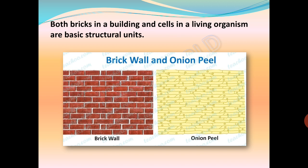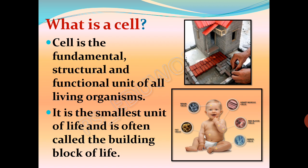In the picture, you can see the similarity between a brick wall and an onion peel. Both bricks in a building and cells in living organisms are basic structural units. Cells in living organisms are complex living structures, unlike non-living bricks. Cell is the fundamental, structural and functional unit of all living organisms. It is the smallest unit of life and is often called the building block of life.